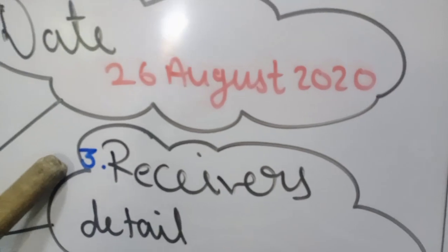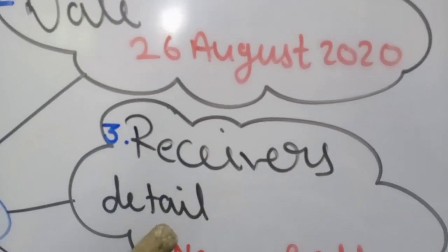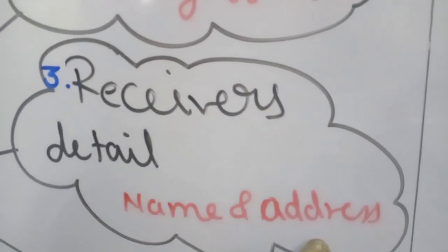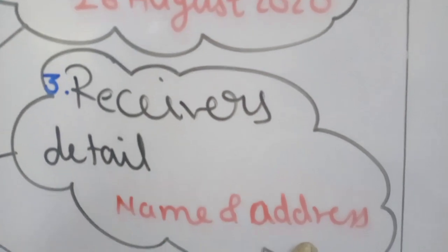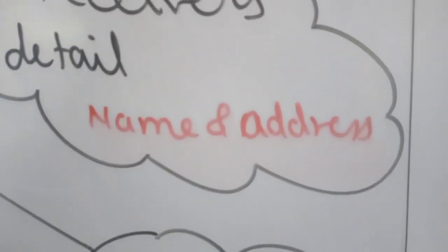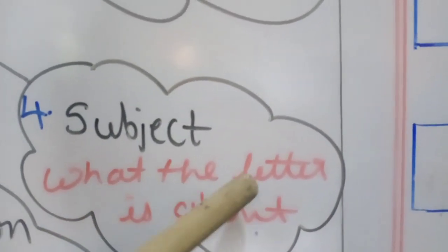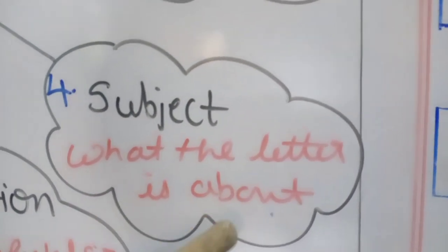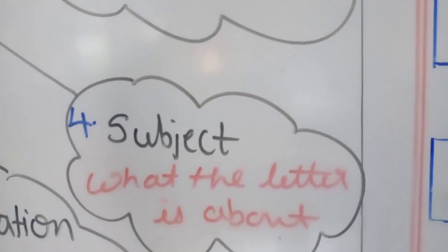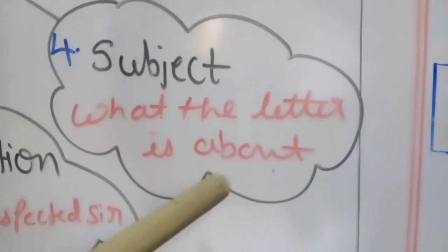The third step is receiver's detail. In the receiver's detail we also have to write the name and address of the person to whom we are writing the letter. The next step is subject — the subject of the letter, what the letter is about. The subject should be in its smallest form, four to five words, a brief statement of what the letter is about.